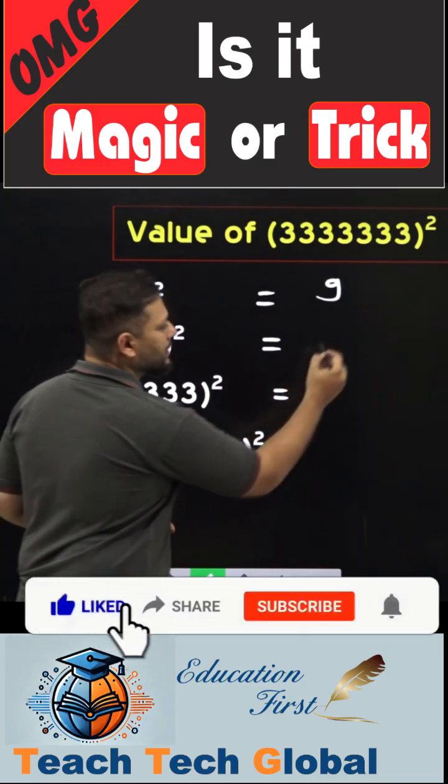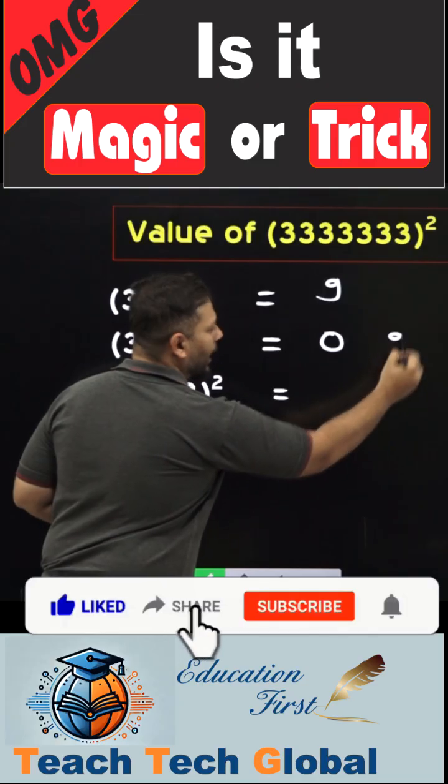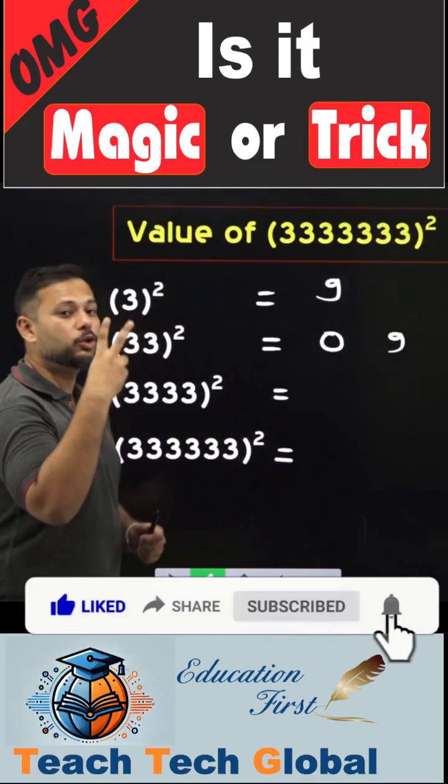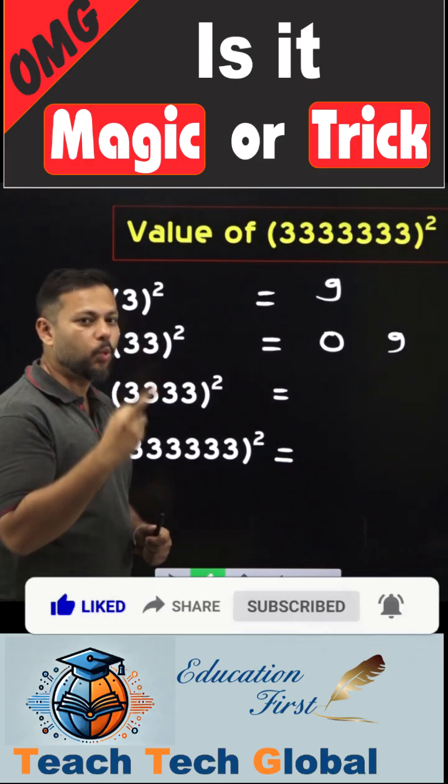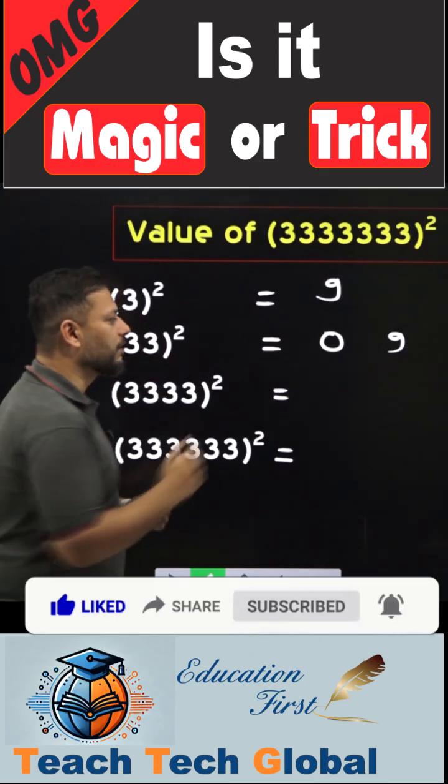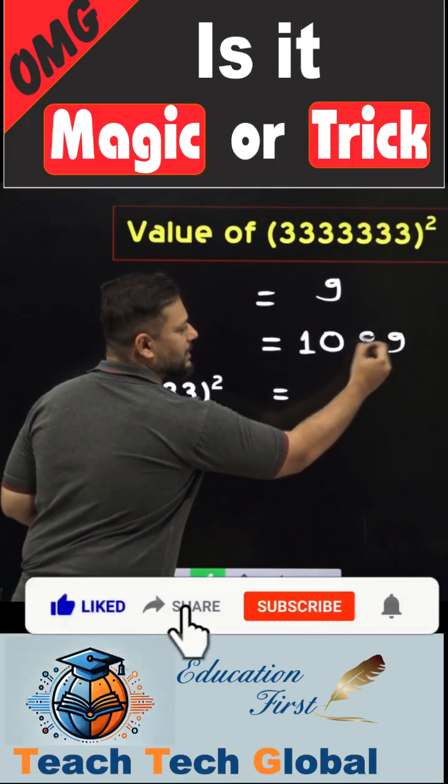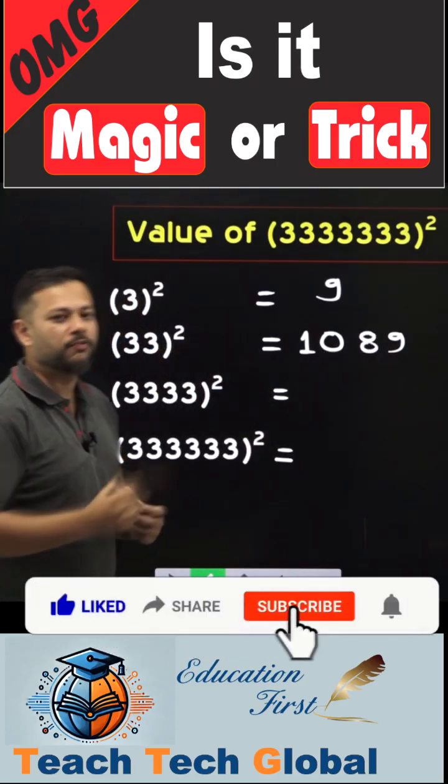What is the square of 3? We know it's 9. So write it as 09 being in 2 digits. Now count the number of 3's. There are 2 3's over here. Just reduce 1. So 1 is left. So we will write a number which is greater than 0 once and a number which is less than 9 once. This is the square of 33.